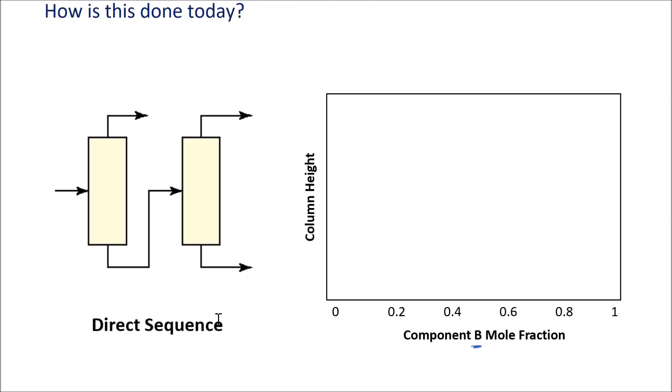So how are ternary mixtures separated today? This is typically done using what's called a direct sequence of columns. It requires two columns in sequence to separate those three components. We have our mixture of A, B, and C coming in, light component A coming out of the distillate of the first, B and C going to the second, and then B coming out the distillate of the second, and C coming out at the bottom. This works quite well and has been used quite extensively.